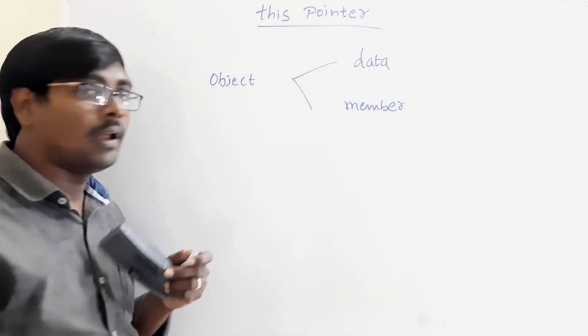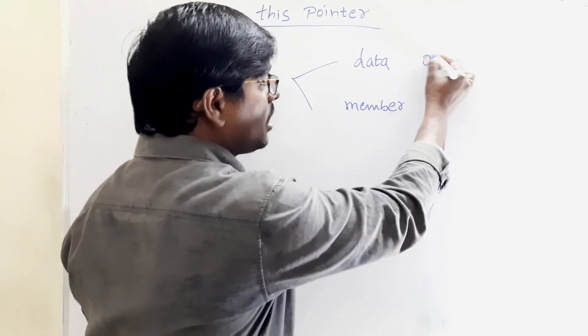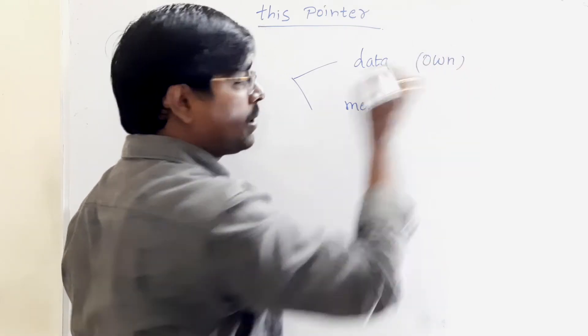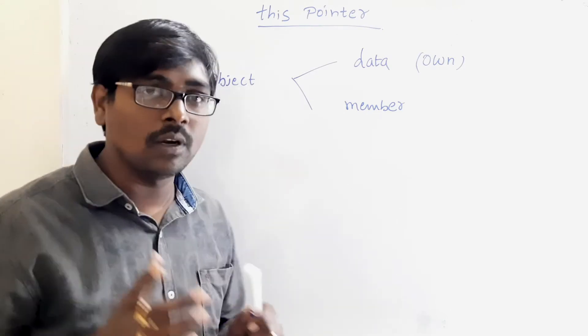Now, in the object perspective, each object has its own copy of data members. That means, assume we have three objects - object 1, 2, and 3.